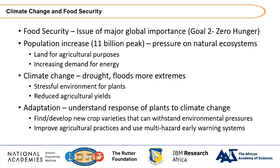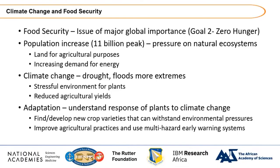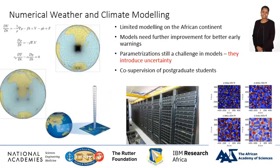What this means is that we need to start thinking about adaptation. That speaks to thinking about the response of plants to climate change — we need to find or develop new crop varieties that can withstand environmental stresses associated with climate change, and we need to improve our agricultural practices. One of the things we also need to think about is multi-hazard early warning systems. The UN plans to have everybody getting access to these early warning systems within the next five years.